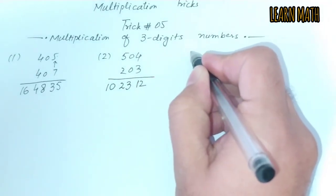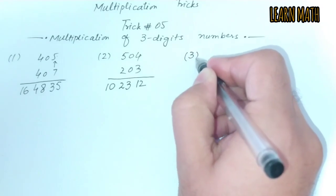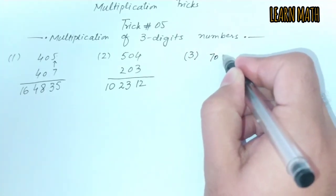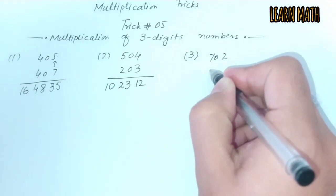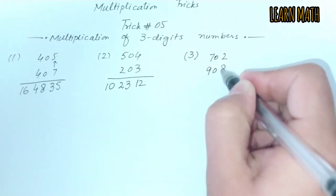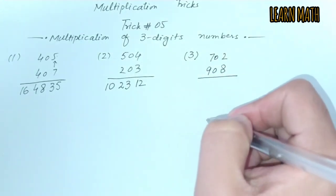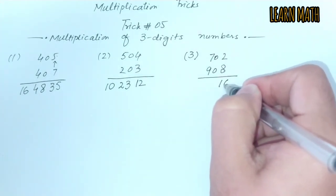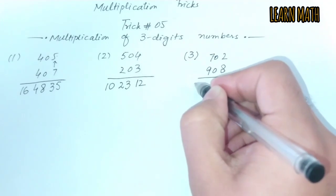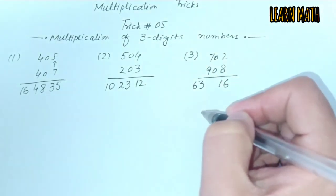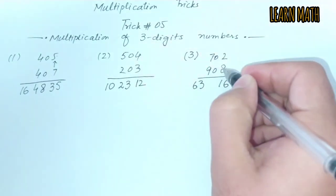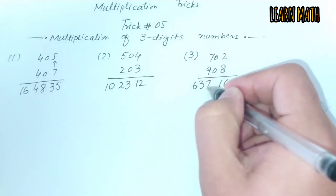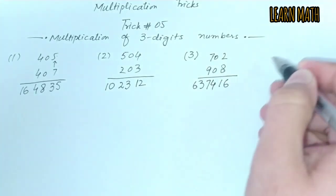In the third example we have 702 and 908. First we will multiply 8 into 2, which is 16, and 9 into 7, which is 63. Then we will multiply 7 into 8, which is 56, and 9 into 2, which is 18. And this is the answer.